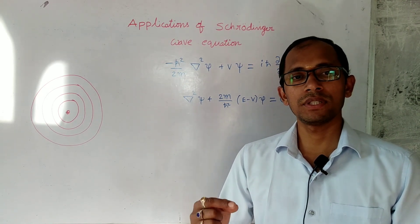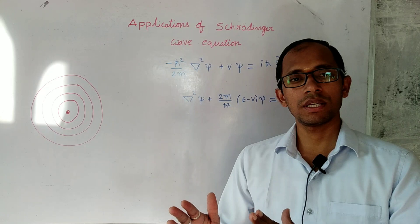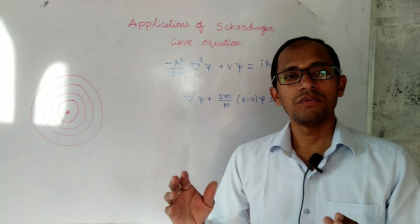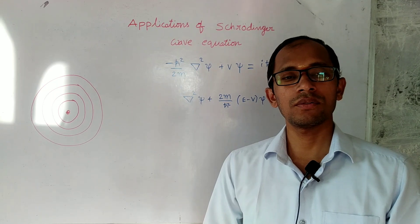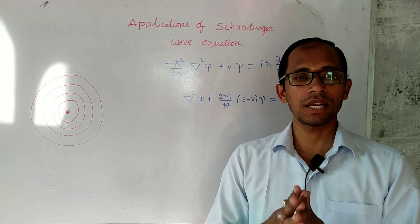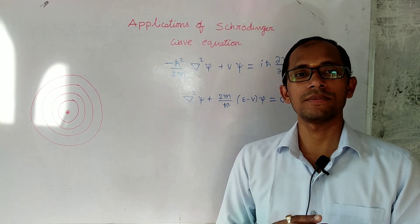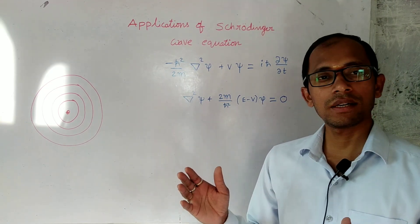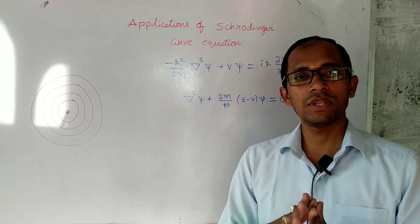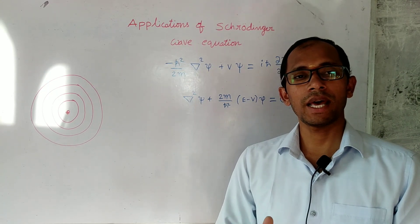We also discussed the physical significance of this wave function. Now, once the wave is imagined, there is a wave function to describe it. And after that, we need some equation — a wave equation — in order to solve for the wave function values. So like other waves, that wave equation was given by Schrödinger. In 1927, Schrödinger gave two equations: the Schrödinger time-dependent and time-independent equations. These equations describe the motion of the wave as well as the wave function.